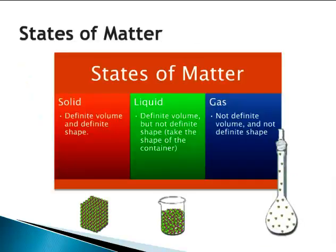There are three common states of matter: solids, liquids, and gases. A solid has a definite volume and definite shape. A liquid has a definite volume but does not have a definite shape — liquids take the shape of their container. A gas does not have a definite volume nor a definite shape — gases take the shape and volume of their container.